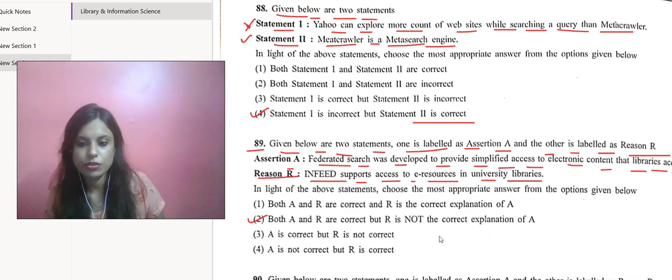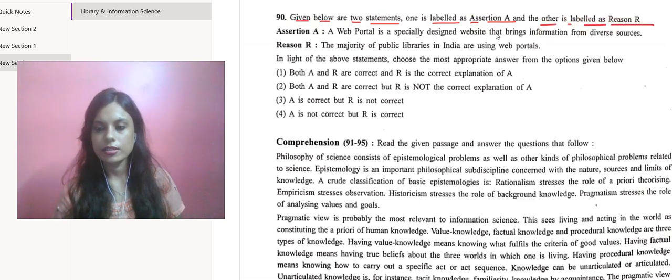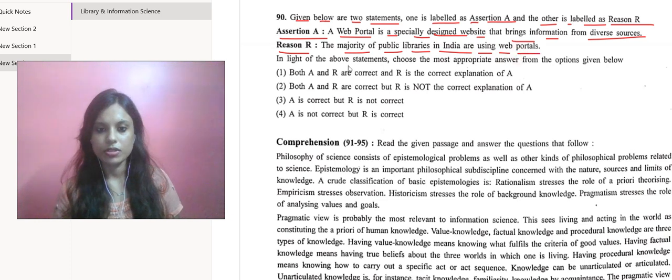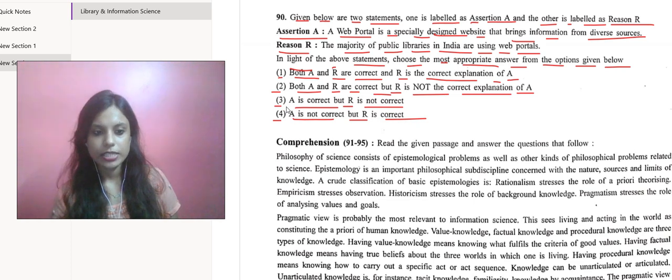Next question. Given below are two statements - one labeled as Assertion A and the other as Reason R. Assertion A says a web portal is a specially designed website that brings information from diverse sources. Reason R: the majority of public libraries in India are using web portals. In light of the above statements, choose the most appropriate answer. The options are: both A and R are correct and R is the correct explanation of A; both A and R are correct but R is not the correct explanation; A is correct but R is not correct; A is not correct but R is correct. We are going with A is correct but R is not correct.